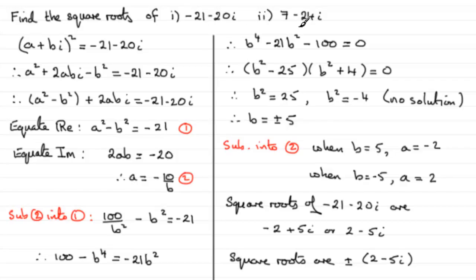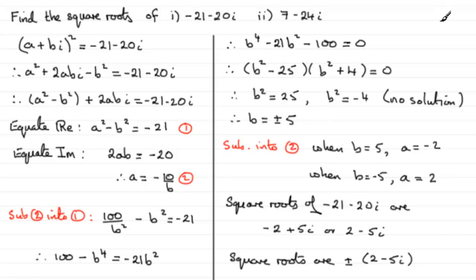You might like to pause the video now and have a go at finding the square roots of 7 minus 24i. Set it up in a similar way: a plus bi all squared equals 7 minus 24i, then work through the same method. Pause the video and come back when ready and I'll show you the solution.